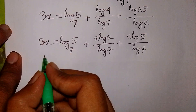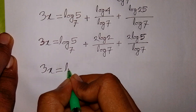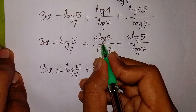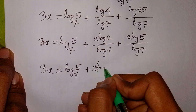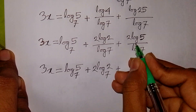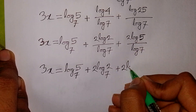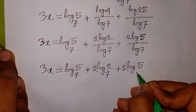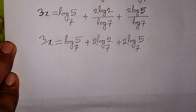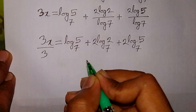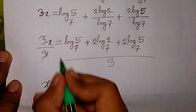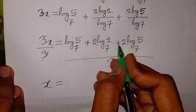Now 3x equals log 5 base 7 plus 2 times (log 2 over log 7), which is the same as 2·log 2 base 7, plus 2 times (log 5 over log 7), which is the same as 2·log 5 base 7. We need the value of x, so we divide both sides by 3.